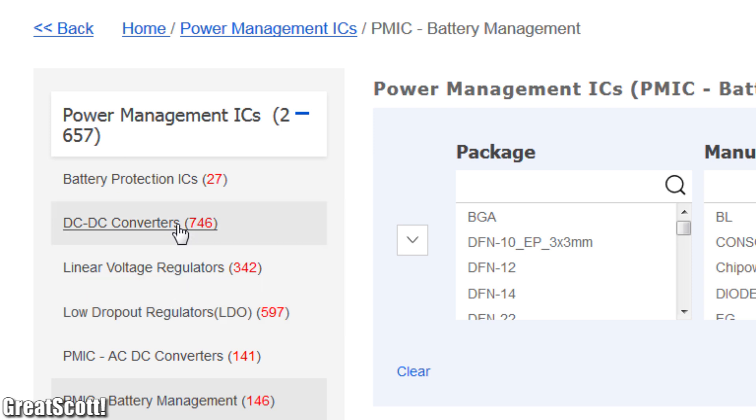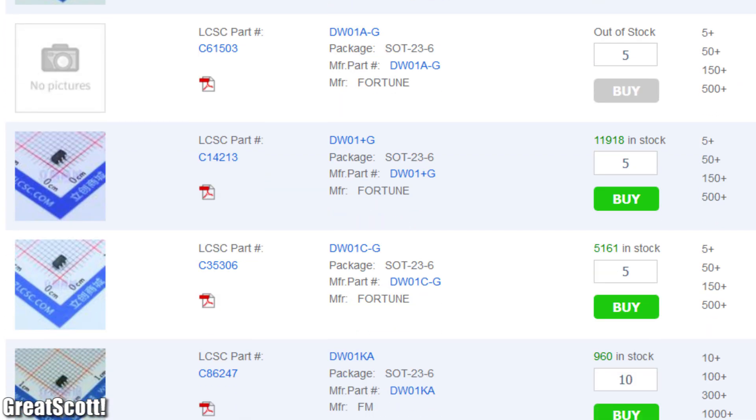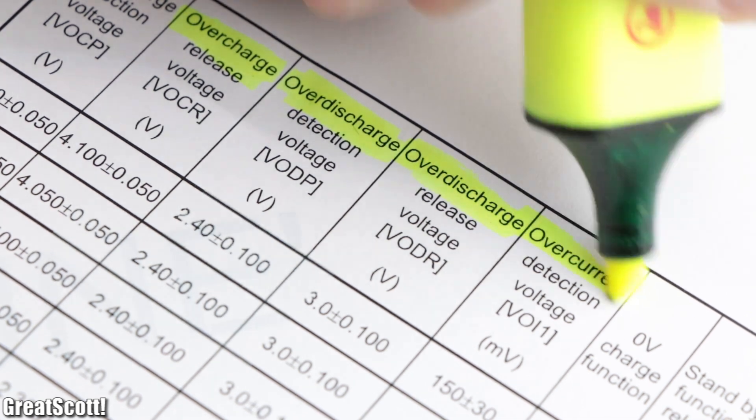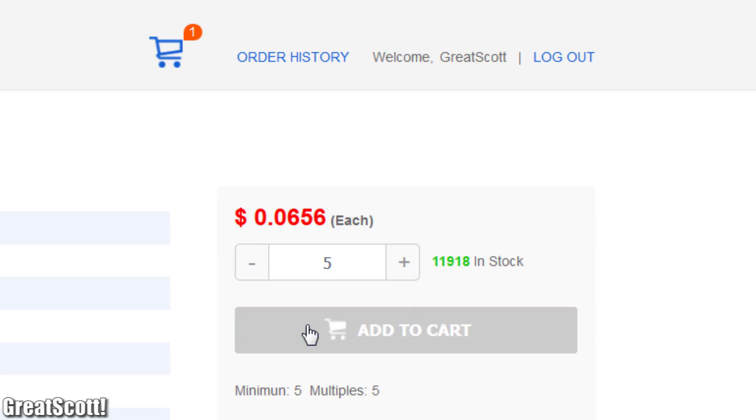Next we need a protection IC. The first entry, the DW01, pretty much offered all the protection features I cared about, so I chose it without wasting any time.